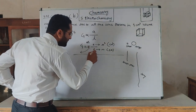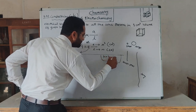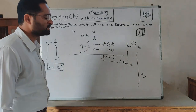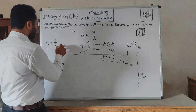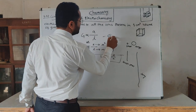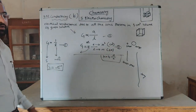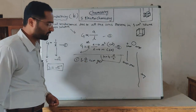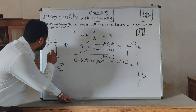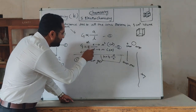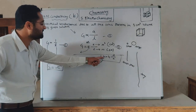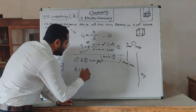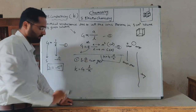G equals K times A divided by L. Therefore, K equals G times L divided by A. According to equations 1 and 3, G equals 1 divided by R, and K equals G times L divided by A.